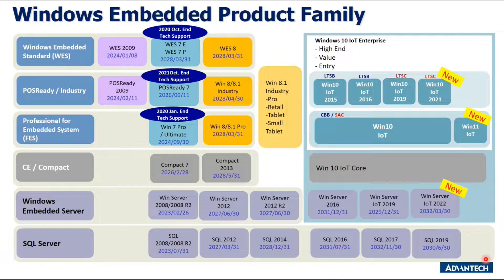There are three new products launched last year: Windows IoT 2021 LTSC, Windows 11 IoT, and Windows Server IoT 2022. One thing to note — Windows 11 IoT does not have an LTSC version yet. Microsoft has estimated a launch date for the LTSC version, yet to be announced. I'll share more on the differences between LTSC and AC on the next slide.